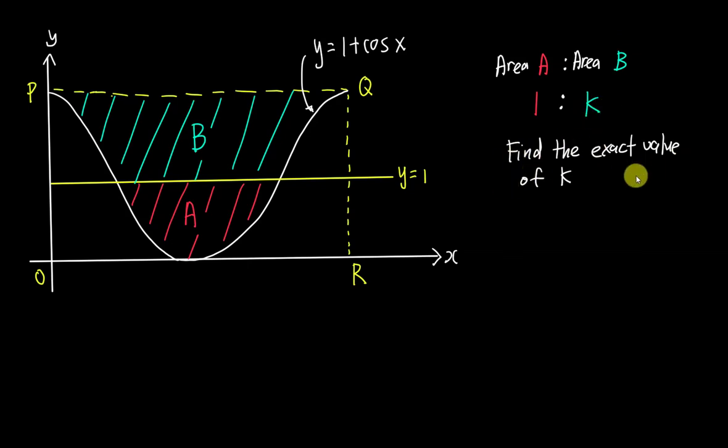In order to solve this question, the first thing that comes to mind is I want to find the intersection point. It's quite easy to find since we have the equation of the cos graph which is 1 plus cos x and the straight line equation y equals 1. So I can just substitute 1 into here, and I will get 1 plus cos x equals 1.